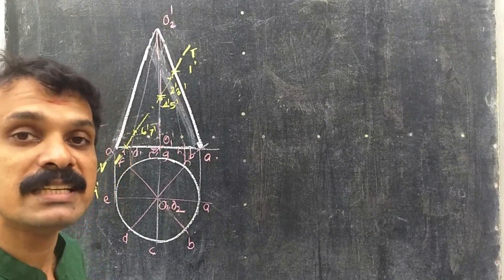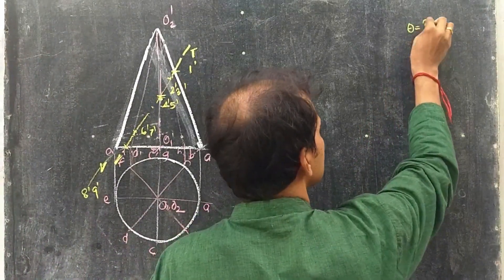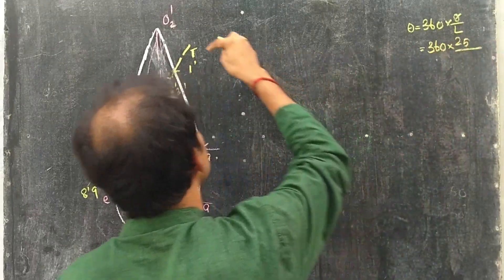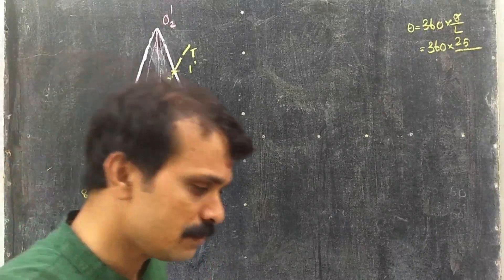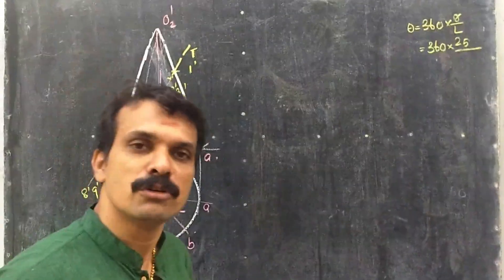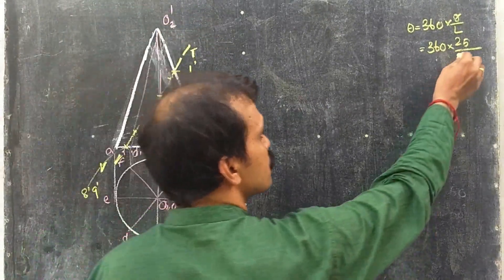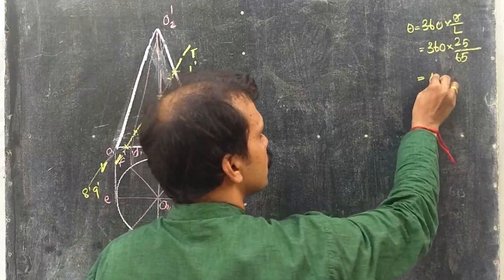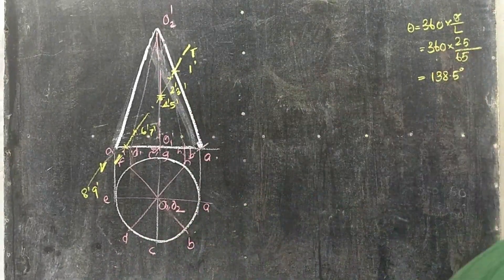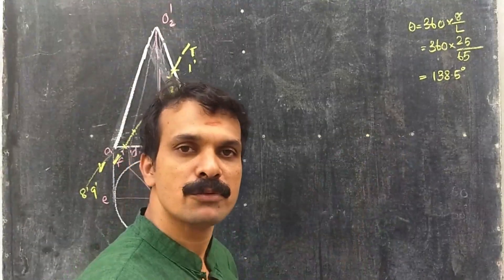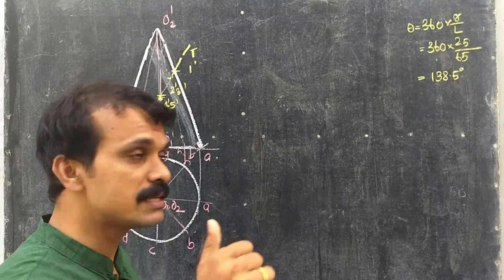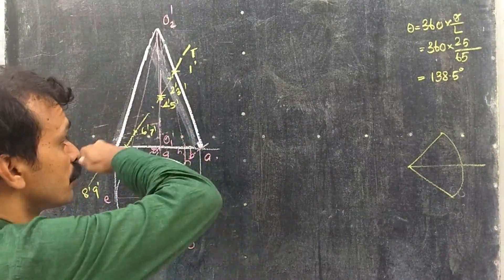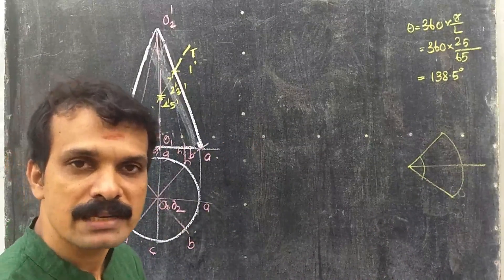Now we have to calculate theta. Theta equals 360 × R / L. We know R equals 25 in this question, and when you measure L you will get a value of approximately 65. Substituting 65, the angle works out to 138.5 degrees. Now we are moving to draw the development.